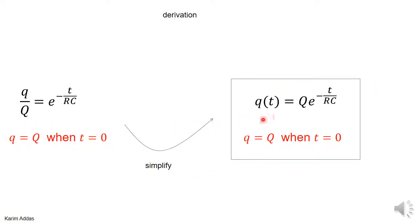The step is just to multiply by Q and you get q(t) equals Q e to the minus t/(RC). This is exactly the equation that we showed in the previous video, and this equation satisfies the initial condition that when the time is zero the charge has a value Q.